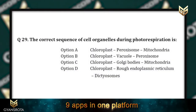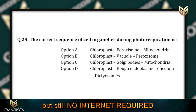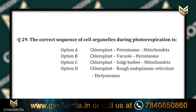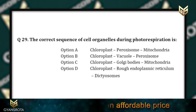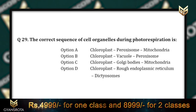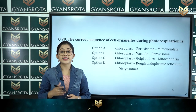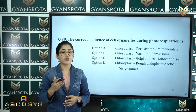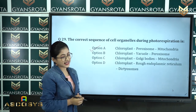Question number 29: The correct sequence of cell organelles during photorespiration is — option A chloroplast, peroxisome, mitochondria; option B chloroplast, vacuole, peroxisome; option C chloroplast, Golgi bodies, mitochondria; option D chloroplast, rough endoplasmic reticulum, dictyosomes. The correct sequence during photorespiration is chloroplast → peroxisome → mitochondria. Option A is the correct answer.